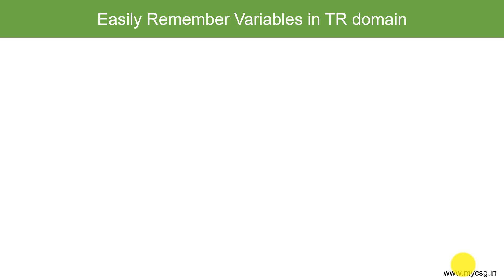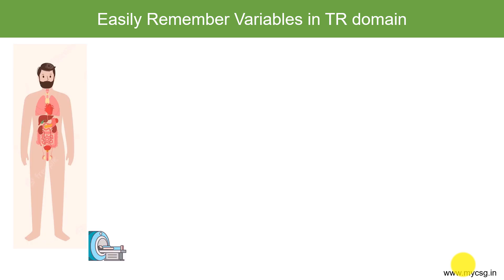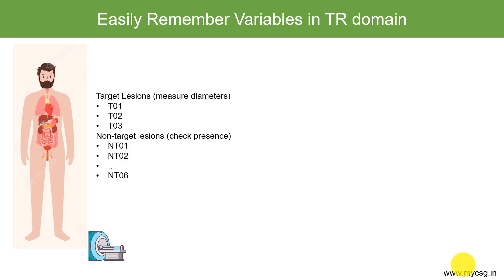Let's say there is a patient who underwent an MRI scan to identify tumors. This patient was identified as having three target lesions and six non-target lesions during the screening measurement assessment. For target lesions, we measure the diameters over the course of the study — during screening, during treatment, and if needed during the follow-up period. For non-target lesions, we check for presence or absence.